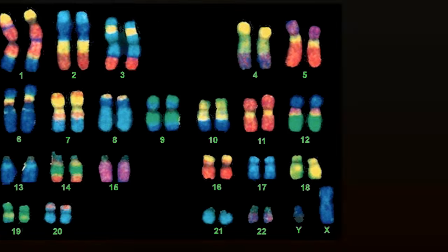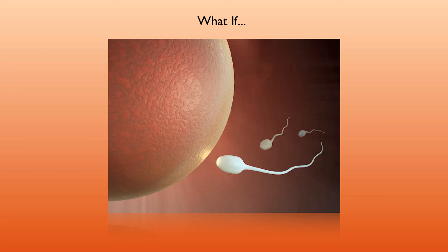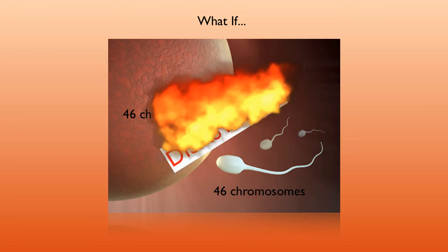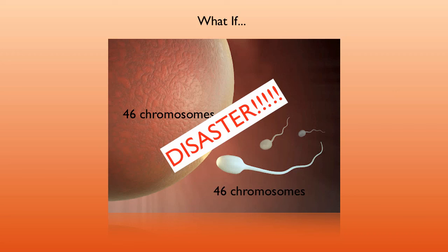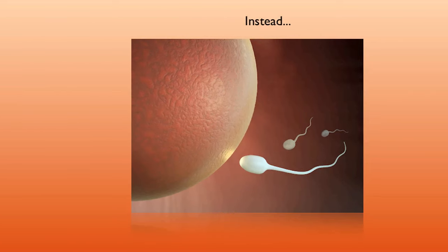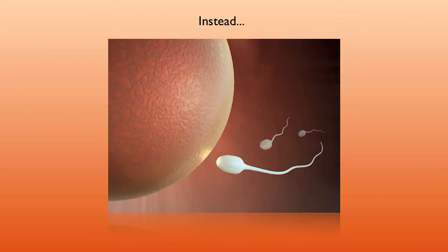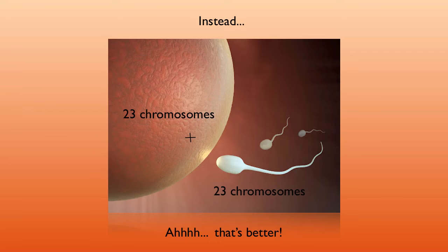When we talk about sex, there's a little bit of a problem with these chromosomes. What if we had this scenario: we have an egg, and humans have 46 chromosomes, right? And what if that egg gets fertilized by a sperm that also had 46 chromosomes? That would be a complete disaster, because then every time you have fertilization you would double the number of chromosomes. Instead, we have an egg cell with only 23 chromosomes and a sperm with only 23 chromosomes. When you have fertilization, now you have the correct number of chromosomes again.